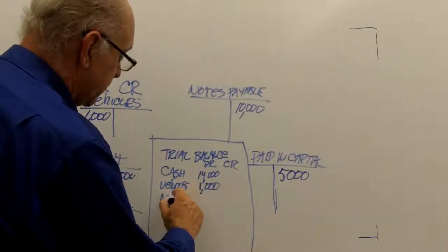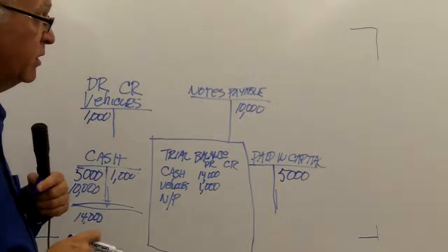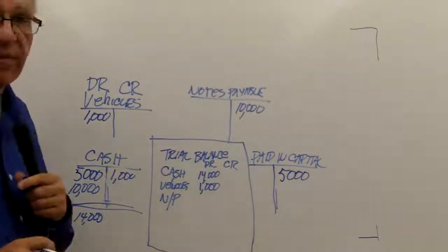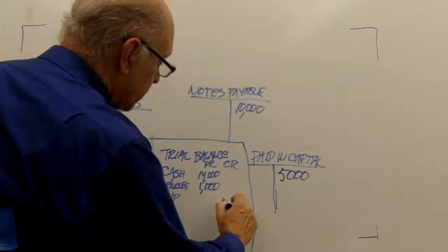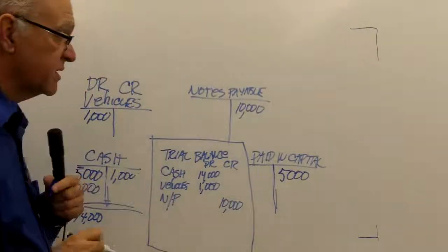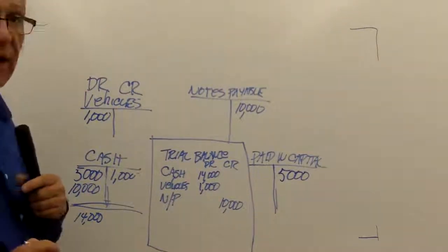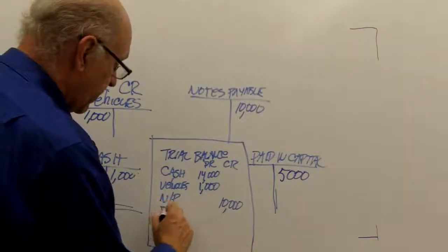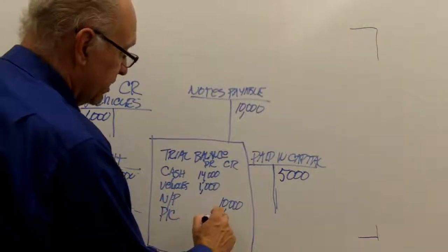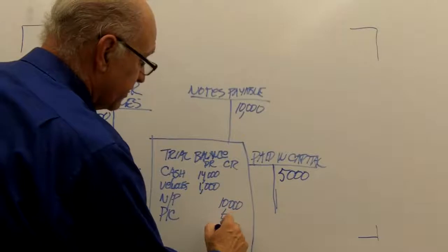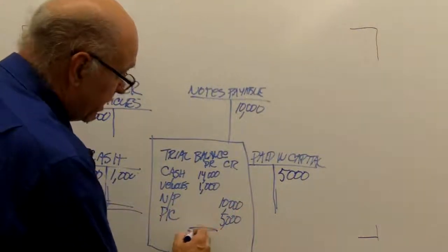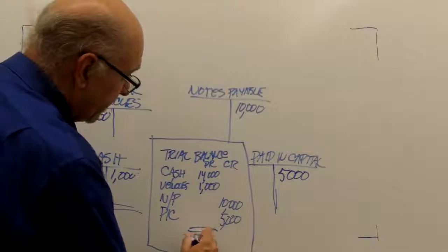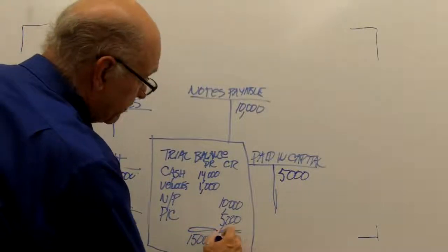Notes payable. I'll abbreviate it here NP. Notes payable. It's $10,000. That's a credit balance. Liabilities have credit balances. And my paid in capital, my owner's equity, abbreviated here PIC, is a $5,000 credit. Lo and behold, my total debits equal my credits.